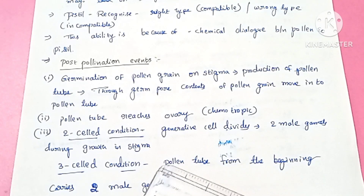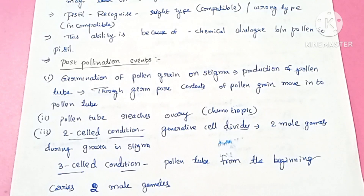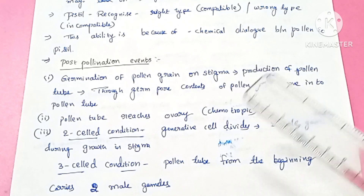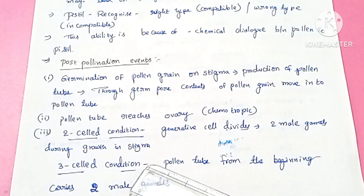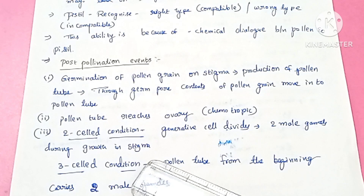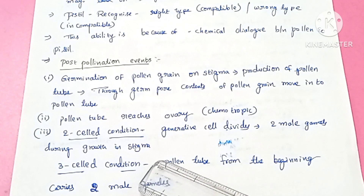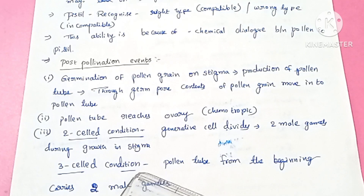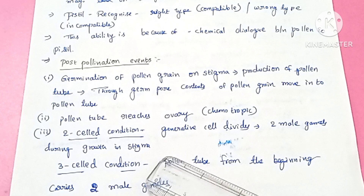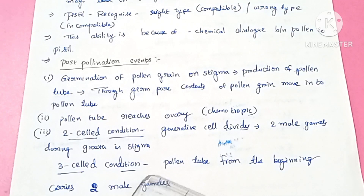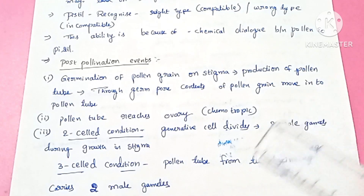In the 2-celled condition, when the pollen grain is shed, the generative cell is normal. When the pollen tube grows, the generative cell will divide into 2 male gametes during growth in the stigma. This is the 2-celled condition.